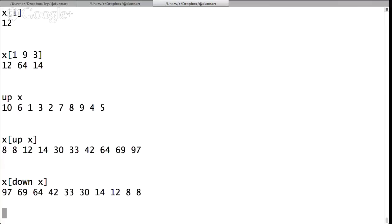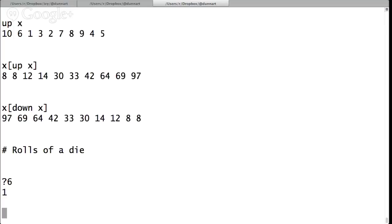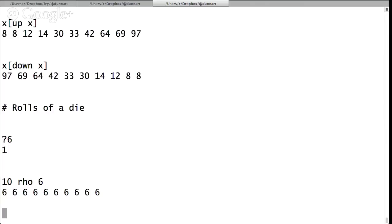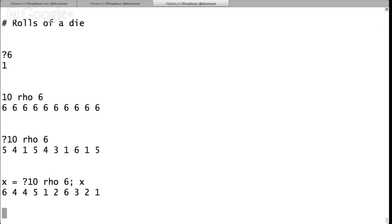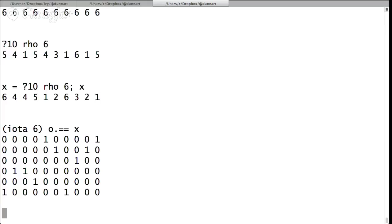And here's an operator called grade up that sorts the indices that would give you a sorted X. So these are the indices of X as they would appear. So you index by the sort, and you put X back into order again. Right? And there's obviously a grade down that goes with it. So that's how sorting works.